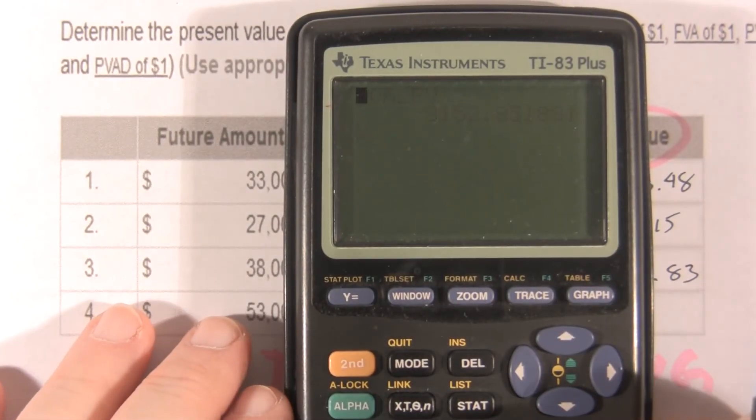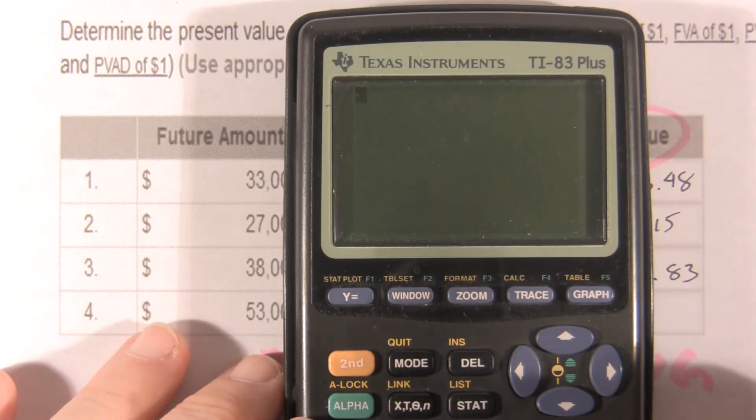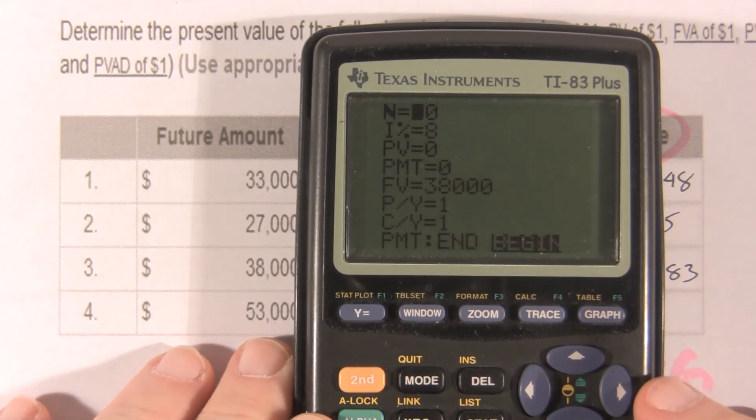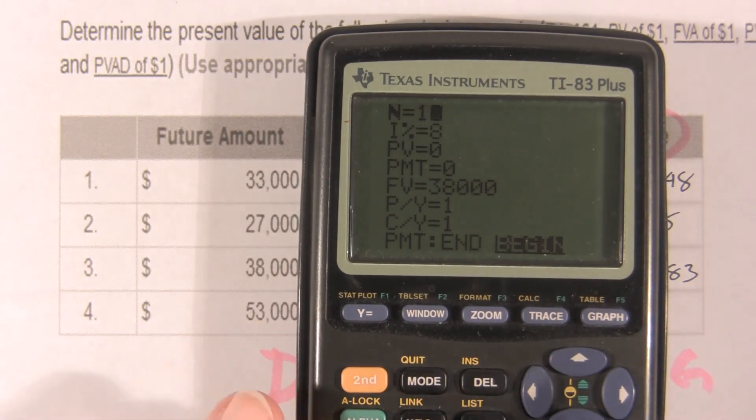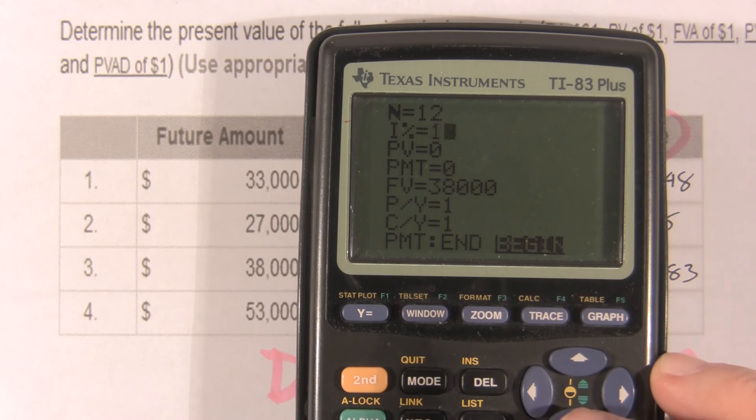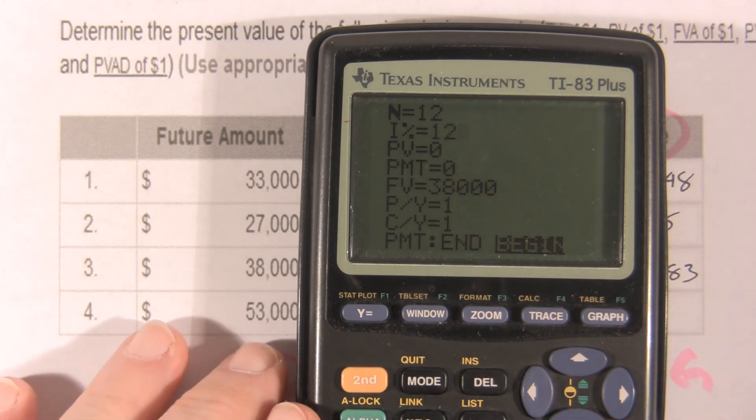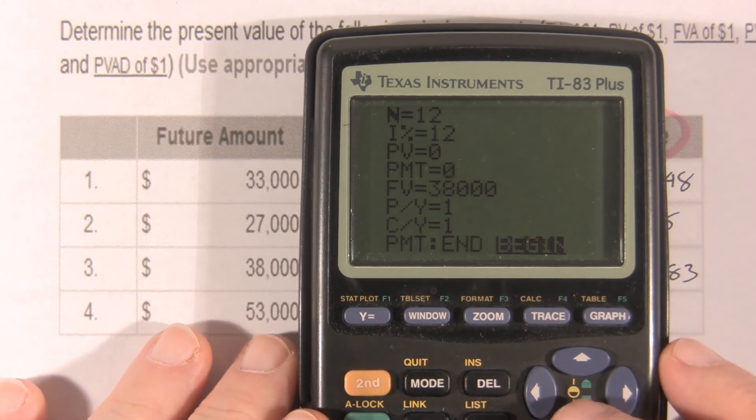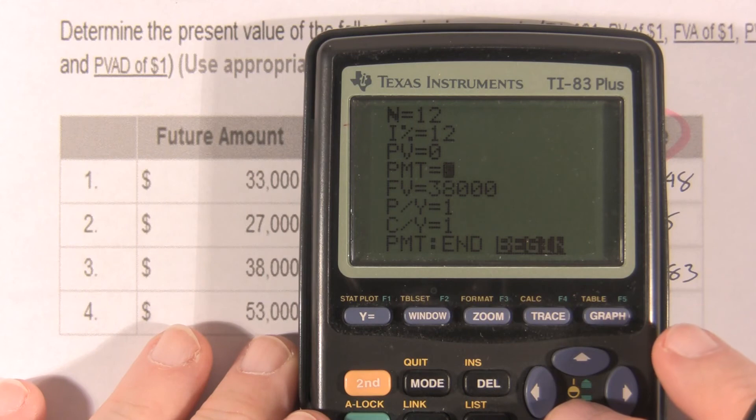And the last one, again, apps, finance, time value of money solver. And we have to put in our N is 12. Our interest rate now is also 12. Present value is what we're looking for. We're not making annual payments. It's a one-time sum. We're looking for the future value. $53,000.